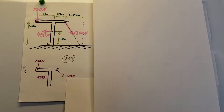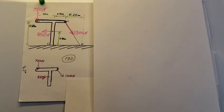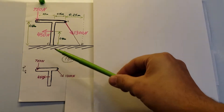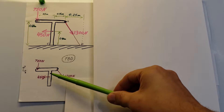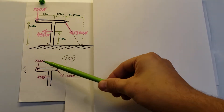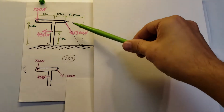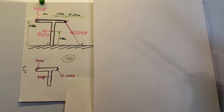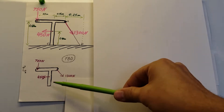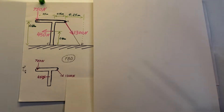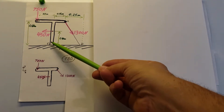First, let's create a free body diagram for our frame. Here it is — we can see the forces: 750 newtons, 450 newtons, and the 1300 newton force in the wire going between B and D. Down here we have our point C.